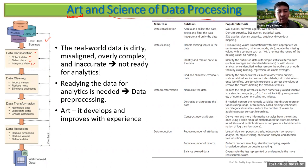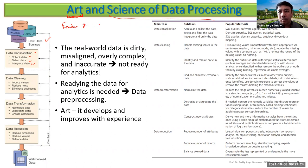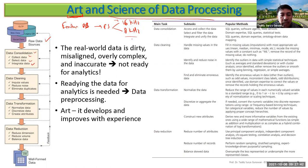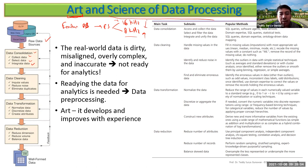Data consolidation involves collecting, selecting, and integrating data. For example, with emotion databases, one may be recorded at 16 kHz and another at 8 kHz. You need to decide which sampling rate to use — either upsample the 8 kHz data or downsample the 16 kHz data so all datasets are at the same frequency before processing.